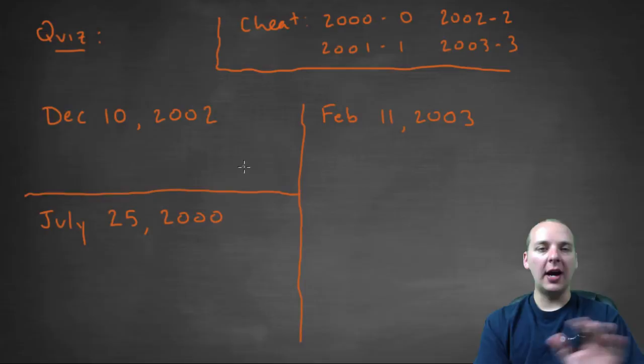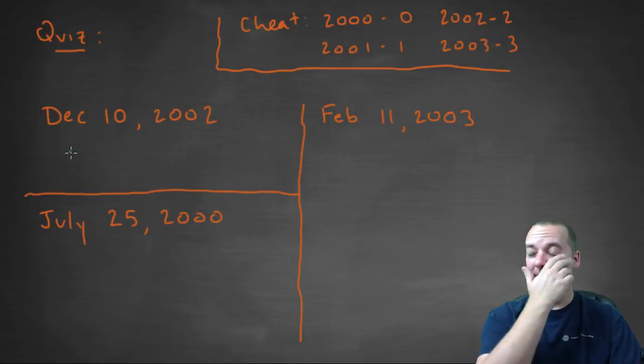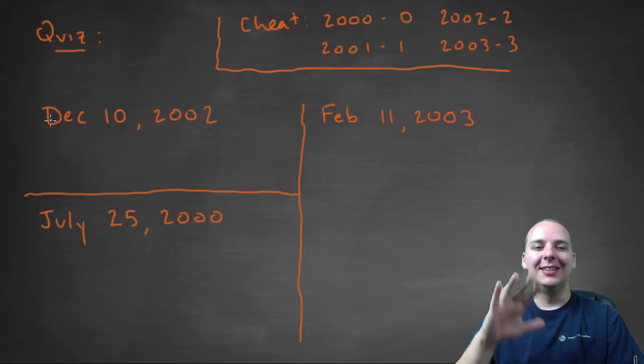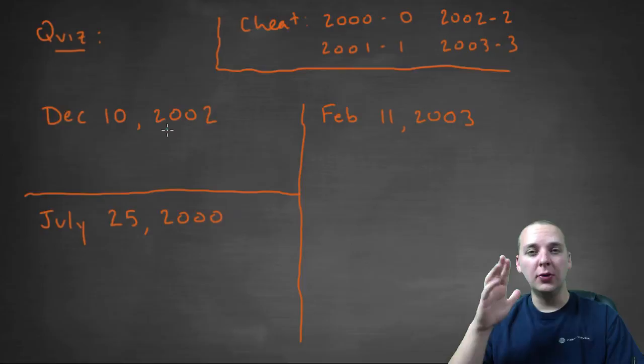So let's try it, let's do 3 completely random calendar dates. We're going to do the day, the month, and the year code. So here we go. If you need to flip back in the video, you're welcome to do that. December 10th, 2002.